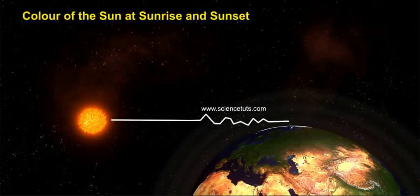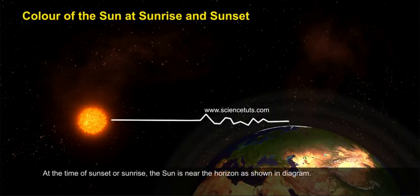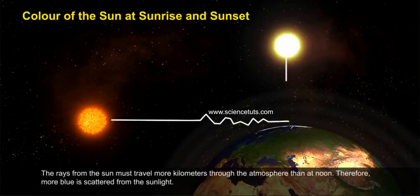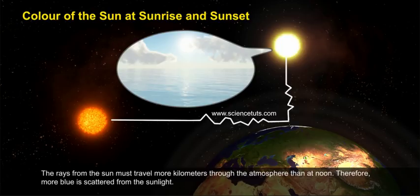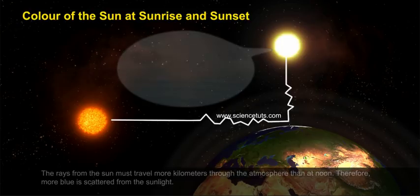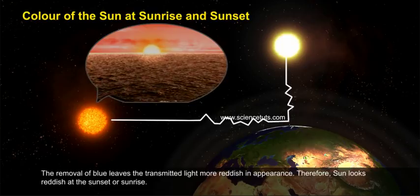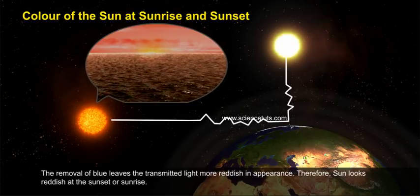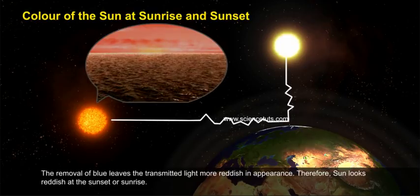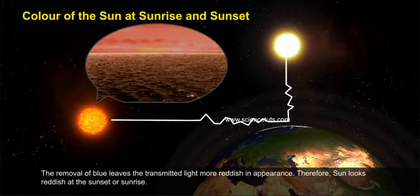Color of the sun at sunrise and sunset. At the time of sunset or sunrise, the sun is near the horizon. The rays from the sun must travel more kilometers through the atmosphere than at noon. Therefore, more blue is scattered from the sunlight. The removal of blue leaves the transmitted light more reddish in appearance. Therefore, the sun looks reddish at sunset or sunrise.